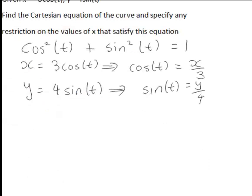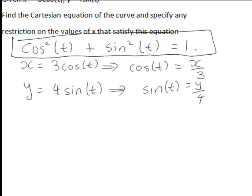From there we can substitute those expressions for cos t and sin t into that identity to get X divided by 3 squared for cos squared t part plus Y divided by 4 squared for the sin squared t part equals 1.